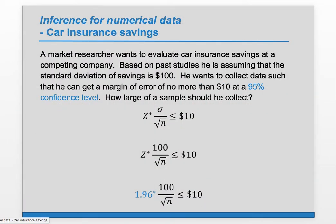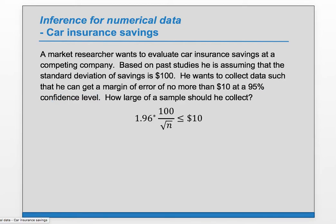Okay, so we have our z star, and now we just need to rearrange this and solve for n. So we can multiply both sides by square root of n, divide both sides by 10, so we get n on the right side there. And then evaluate the left side, and then we can square both sides. And we get n is greater than or equal to this number here.